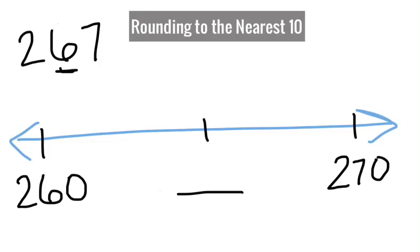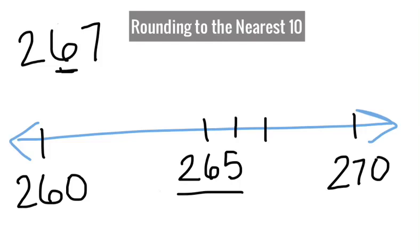Now I need to find the number in the middle. I know I'm rounding by ten, so I have to find half of ten, which is five. So two sixty plus five is two hundred sixty-five. That is half way between two-sixty and two-seventy. Now I have to graph, or put my number, two sixty-seven, on the number line. I know two sixty-seven is two more than two sixty-five, so my two sixty-seven goes right here.